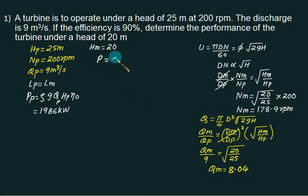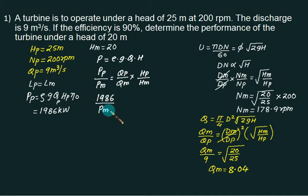And lastly you can go for power as ρ G Q H. So power of prototype upon power of model, ρ will be same, G will be same. So it is simply Qp upon Qm times Hp upon H model. Power is 1986 for prototype. We don't know the model power. Qp is 9, Qm is 8.04, Hp is 25 and for model is 20. So we can find out the power developed in the second case is 1421 kilowatts.